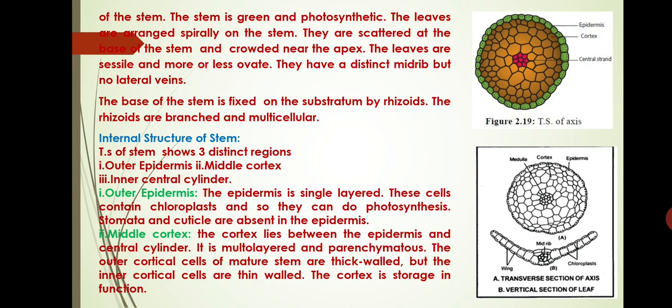The base of the stem is fixed on the substratum by rhizoids. The rhizoids are branched and multicellular. The TS of stem shows three distinct regions: outer epidermis, middle cortex and inner central cylinder. The epidermis is single-layered. The cells contain chloroplasts and so they can do photosynthesis. Stomata and cuticle are absent in the epidermis.